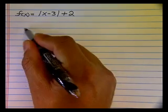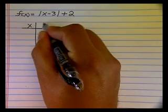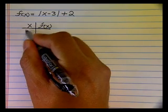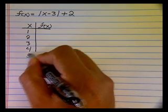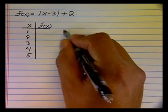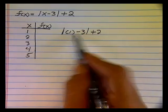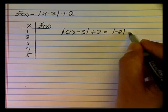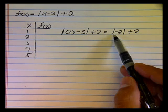I'm going to start off by making a table, looking at some x values and some y values from the function. I'm simply going to plug these x values into the function. For the first one, I'm going to plug in one and simplify. Well, one minus three is negative two, and the absolute value is going to force that negative to a positive two.